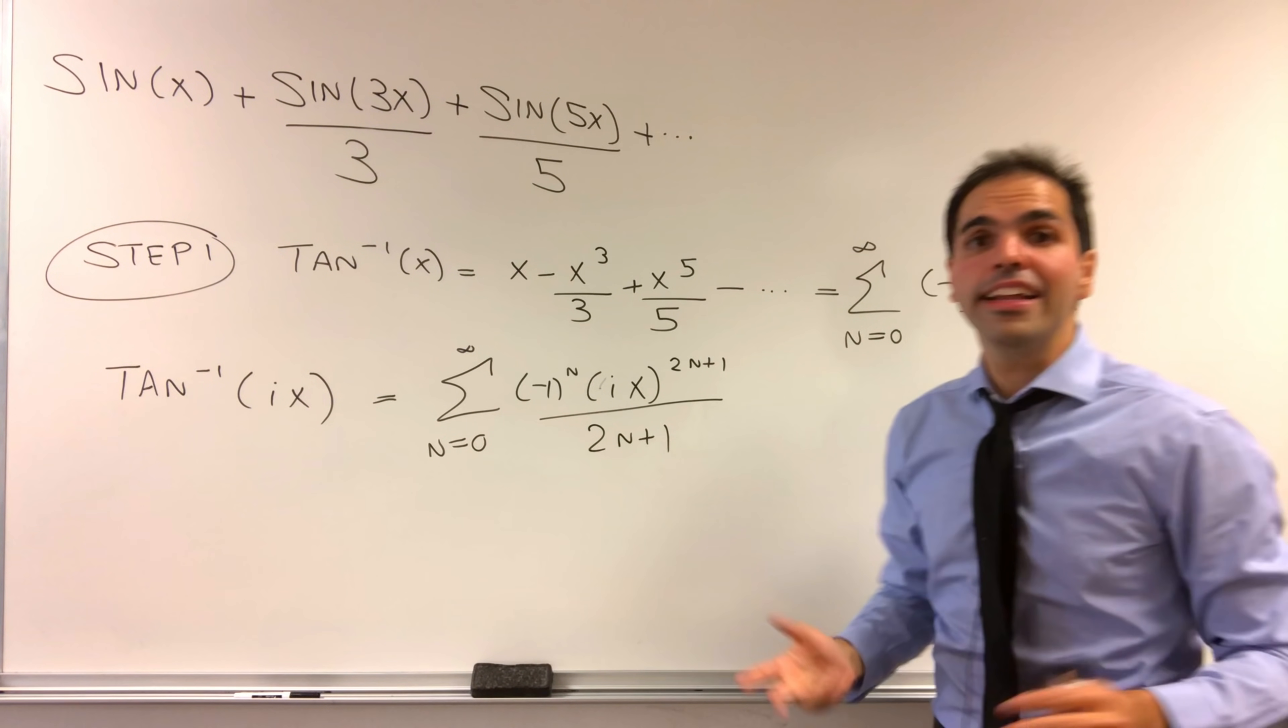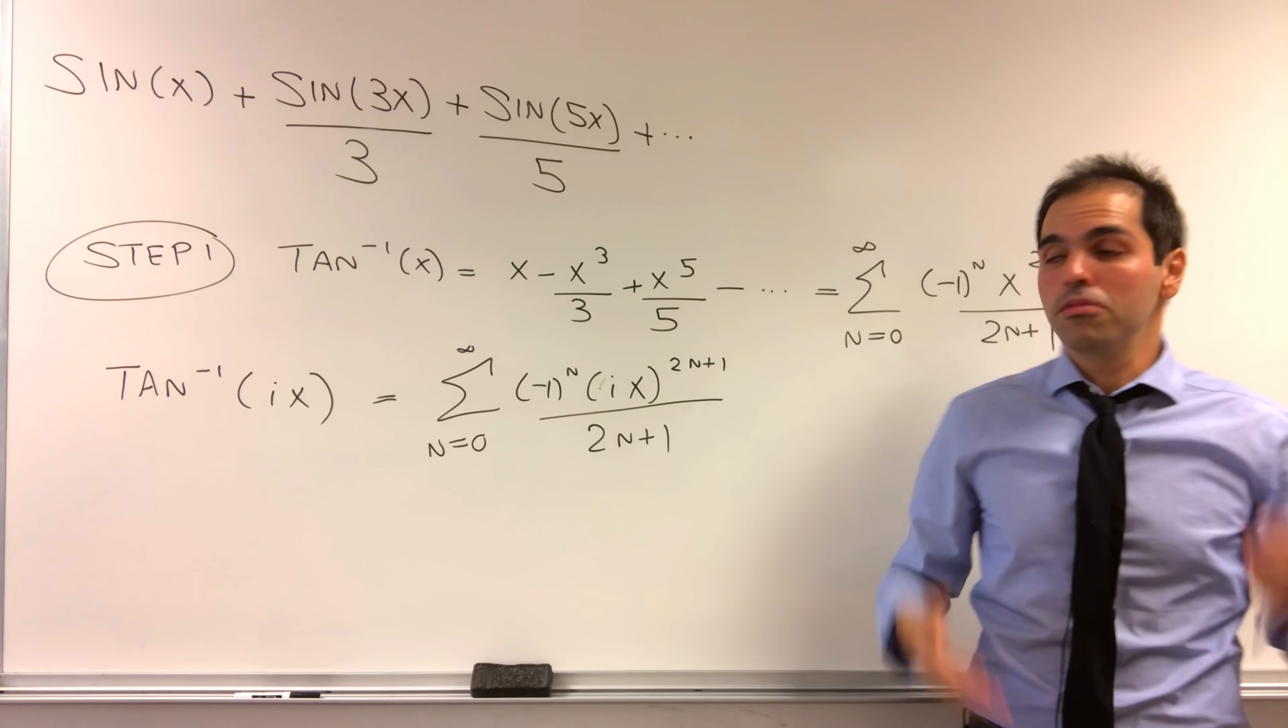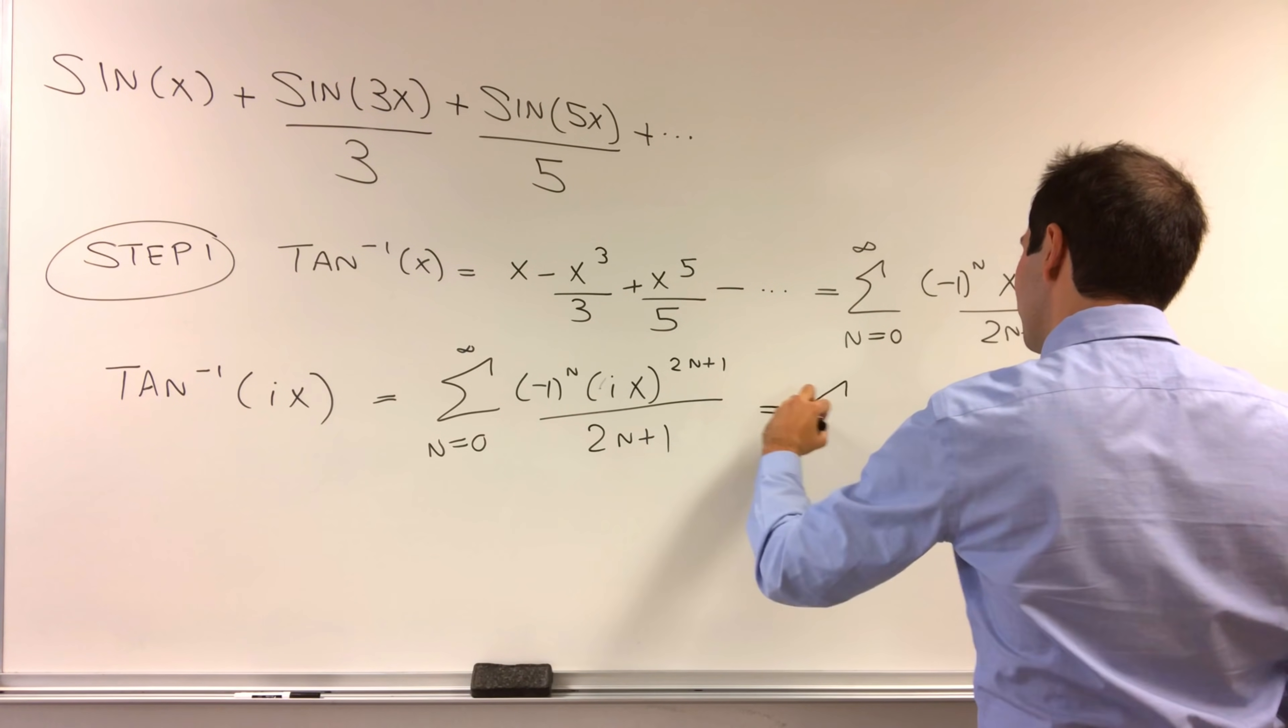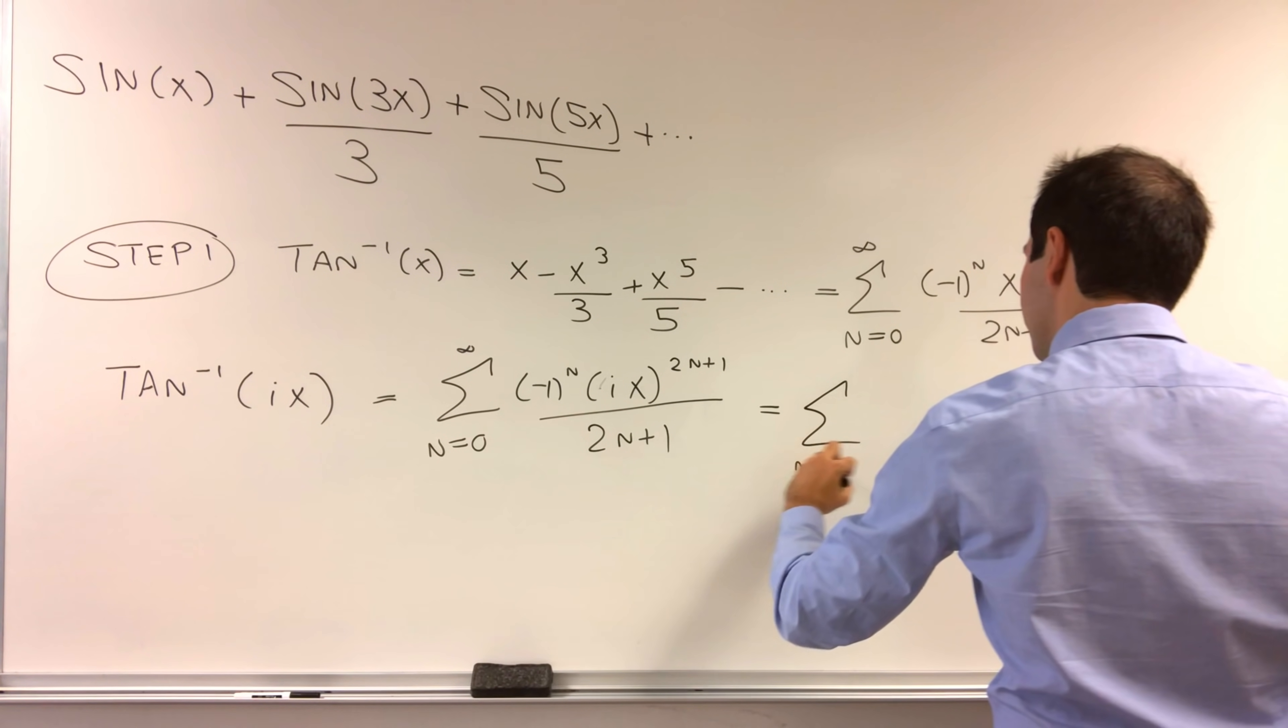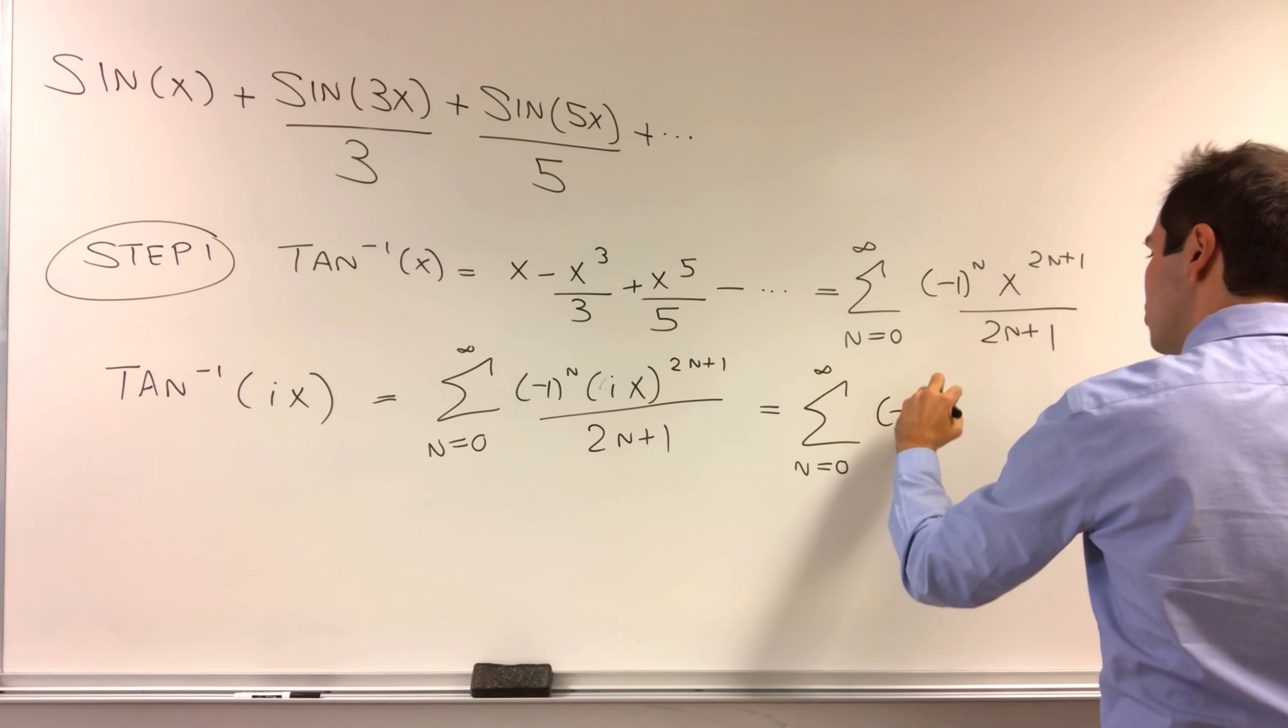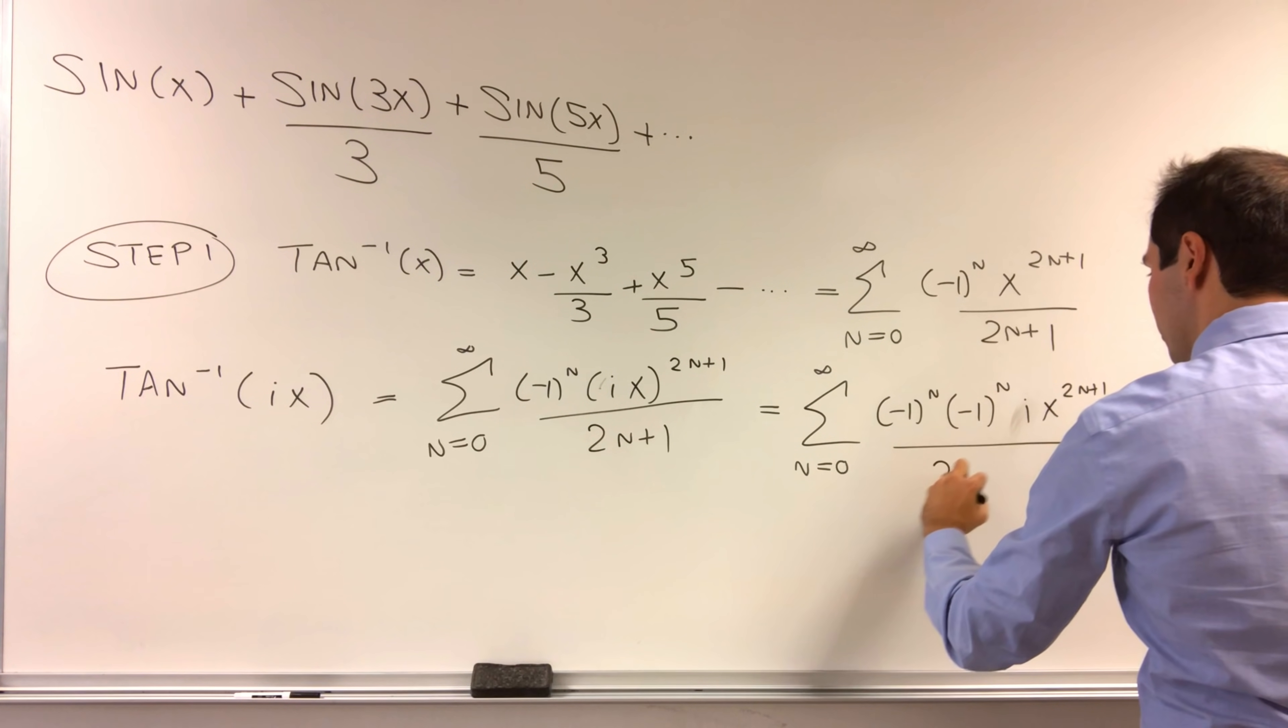But what is i to an odd power? It's just plus or minus i. More specifically, it becomes minus 1 to the n times i. So here, this series becomes sum n from 0 to infinity minus 1 to the n times minus 1 to the n, i, x to the 2n plus 1 over 2n plus 1.